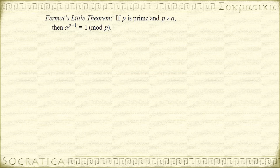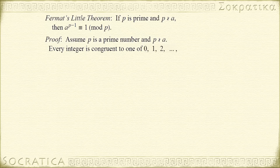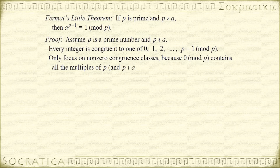So now let's give a formal proof of Fermat's Little Theorem. We assume that p is a prime number and p does not divide a. Then every integer is congruent to one of the following: 0, 1, 2, on and on up to p minus 1. We're only going to focus on the non-zero ones, because 0 is the congruence class that contains all the multiples of p, and we're interested in numbers not divisible by p. So we consider 1, 2, on and on up to p minus 1, and let's multiply all of these by the integer a.